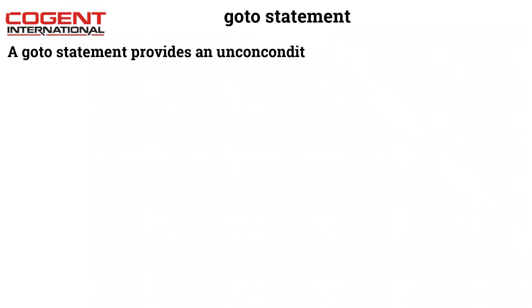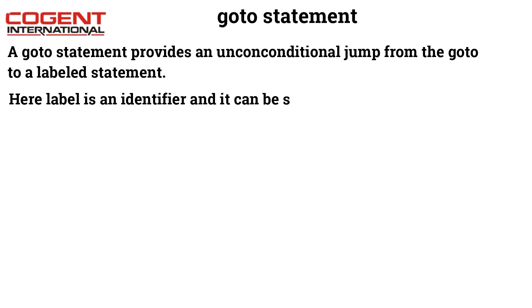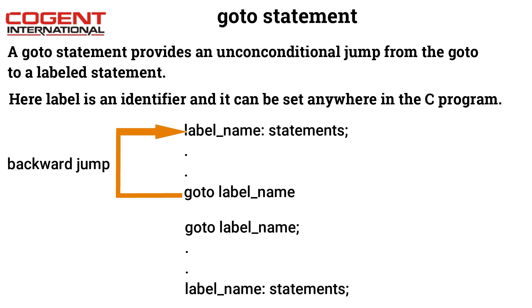A goto statement provides an unconditional jump from the goto to a labeled statement. Here, a label is an identifier and it can be set anywhere in the C program, above or below the goto statement. If the label is set above the goto statement, it is called a backward jump statement.